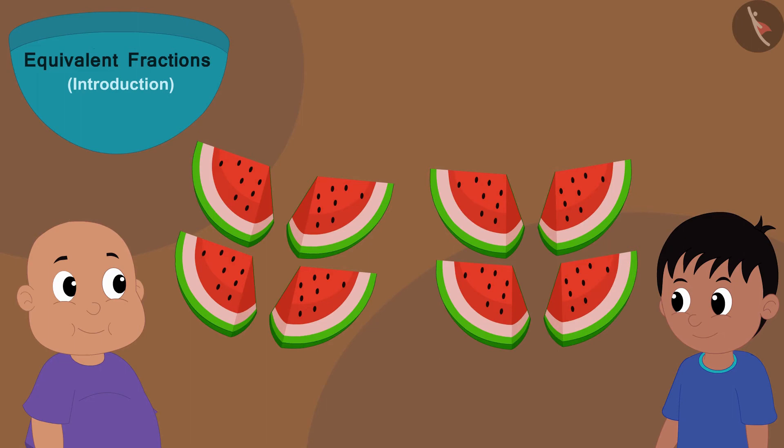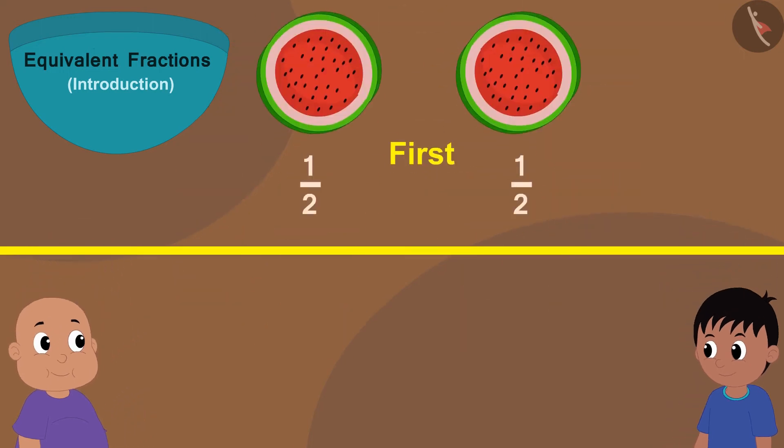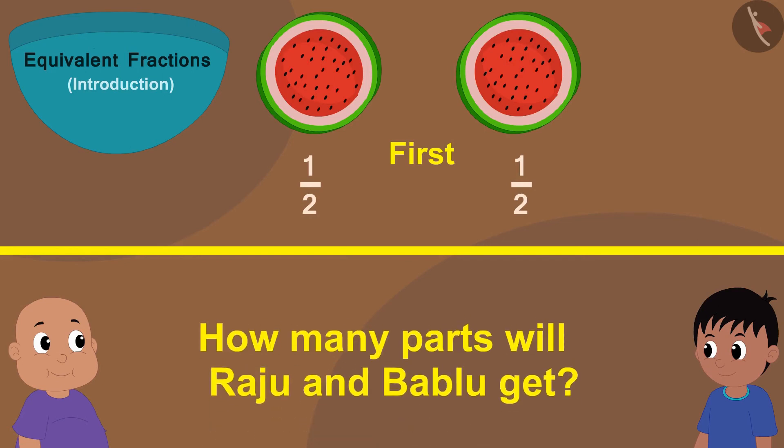And children, you can see, right? All these eight parts are exactly the same. Now, if they have to take as much watermelon as before, that is, half watermelon, how many parts will Raju and Bablu get?